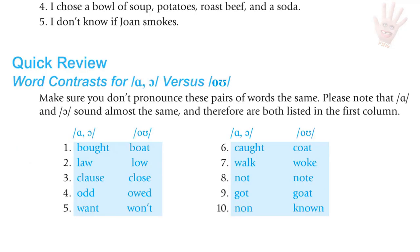Quick review — sound contrasts for Ah and Aw versus O. Make sure you don't pronounce these pairs the same: bought/boat, law/low, clause/clothes, odd/ode, want/won't, caught/coat, walk/woke, not/note, got/goat, non/known.